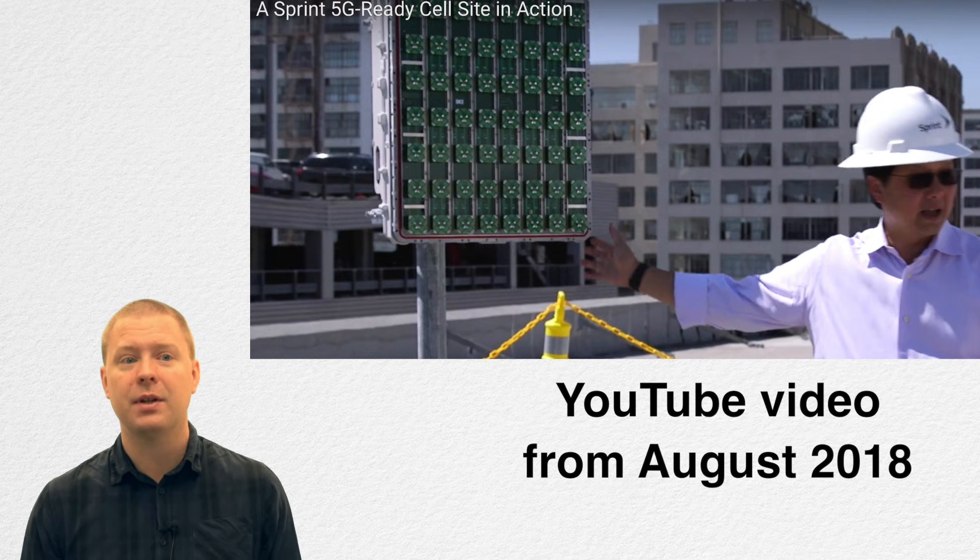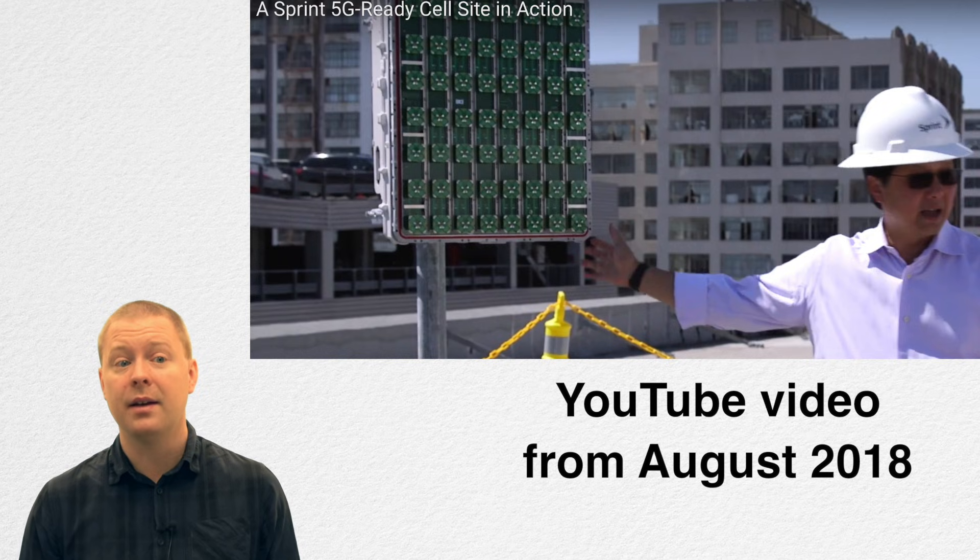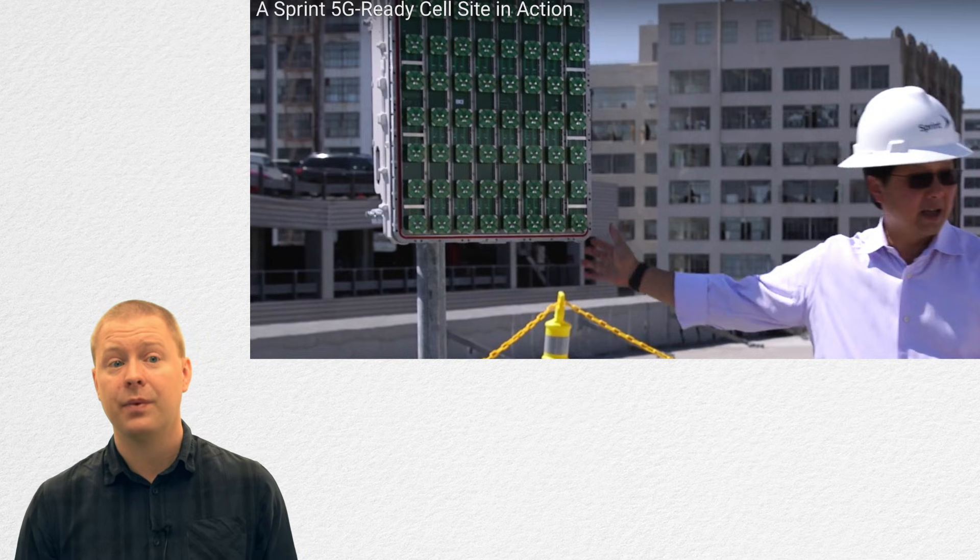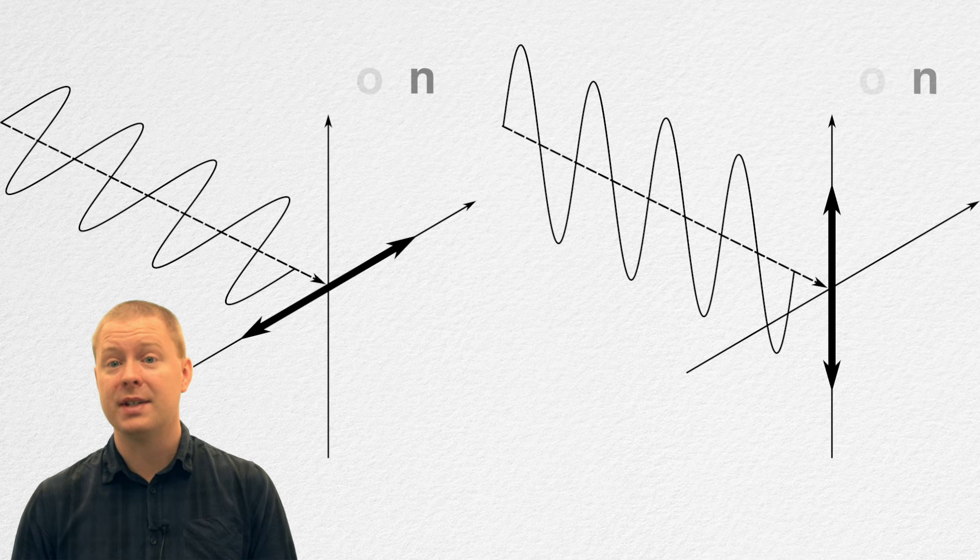Here you see a figure of a 64 antenna base station that has already been deployed in the US, and it contains 128 radiating elements, which means that each antenna is made up of two different radiating elements. To understand what is actually going on here, we need to talk about polarization.